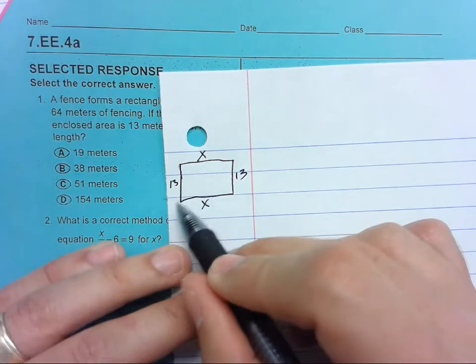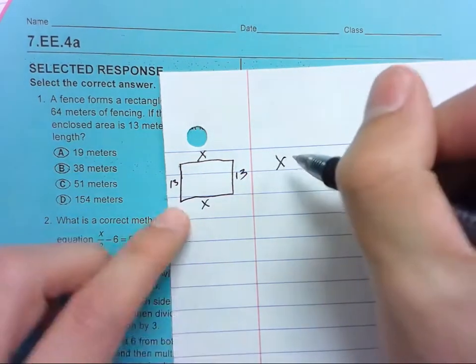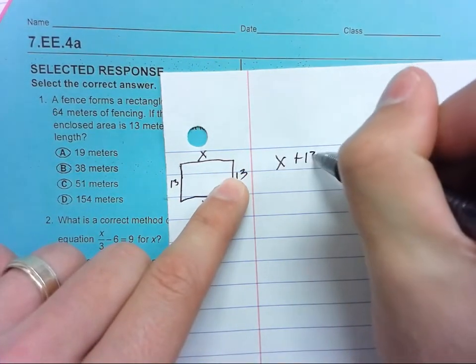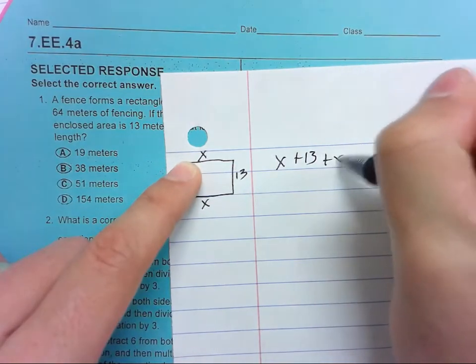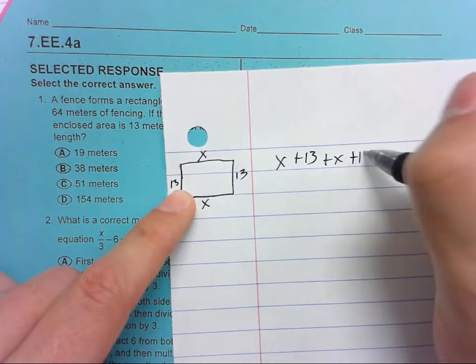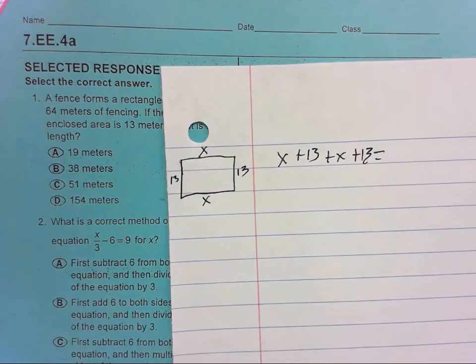So let's just start here and go across. X plus 13, across the top, plus X, down the side, plus 13. When you add those up, you get 64.